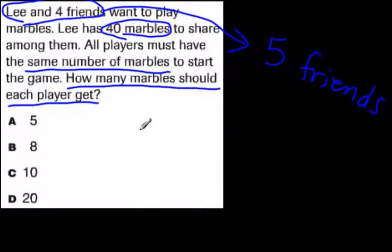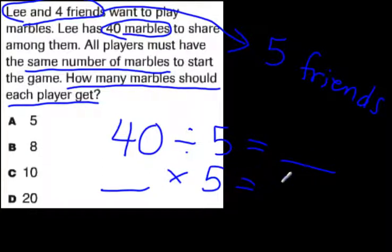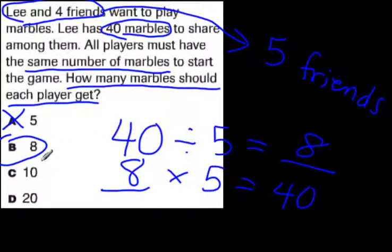Even though you see the digit 4, you have to remember that Lee is a person as well who wants to play. So it's 40 marbles divided by 5 friends. If we divide 40 by 5, what would we get? If you know your times tables, you know a number times 5 equals 40. It's not 5 because 5 times 5 is only 25. It is 8. 40 divided by 5 is 8. Each friend is going to get 8. Remember to pay close attention to where it says Lee and 4 friends. That's actually 5 people.